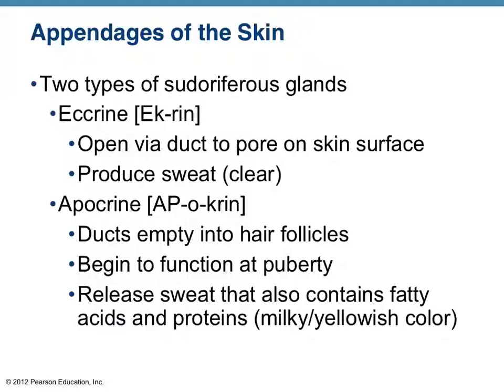There are two types of sudoriferous glands or sweat glands. The most common, the typical sweat gland, is called the eccrine gland. This gland opens to the surface of the skin and produces the typical sweat substance. Apocrine glands aren't quite as numerous — they enter into the hair follicles and aren't even active until puberty, but the sweat is a little bit more fatty and thicker in consistency. We just need to know that there are two different types.